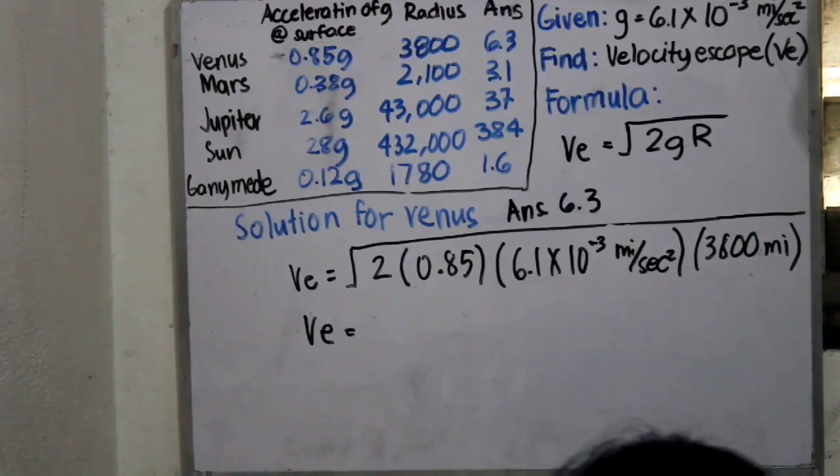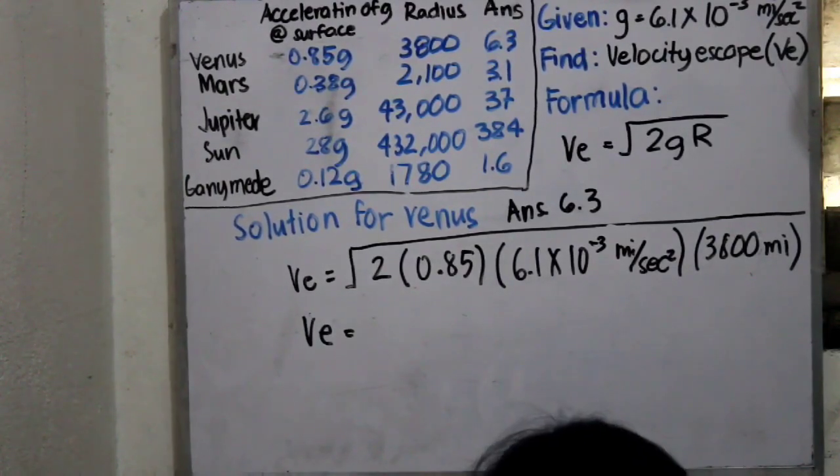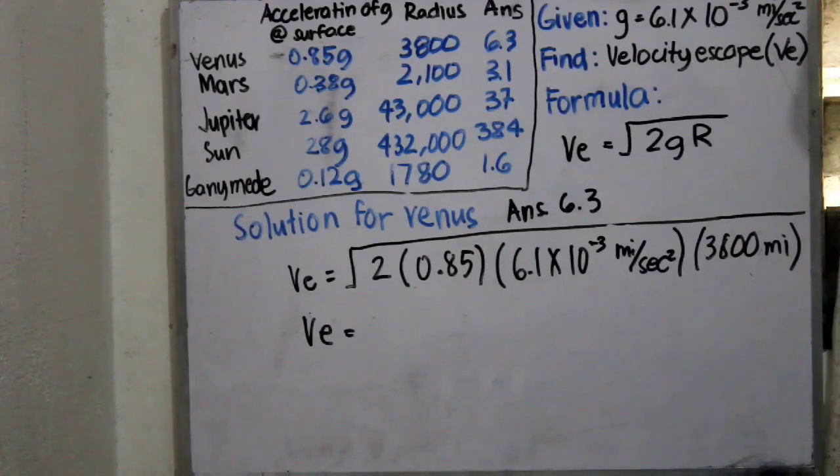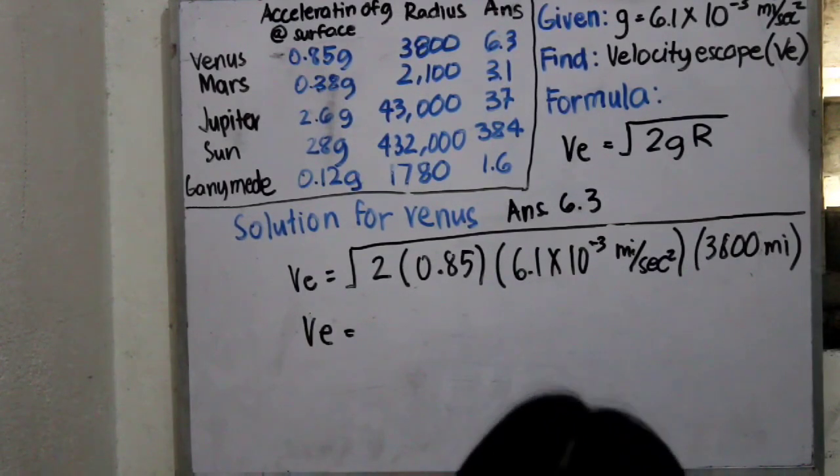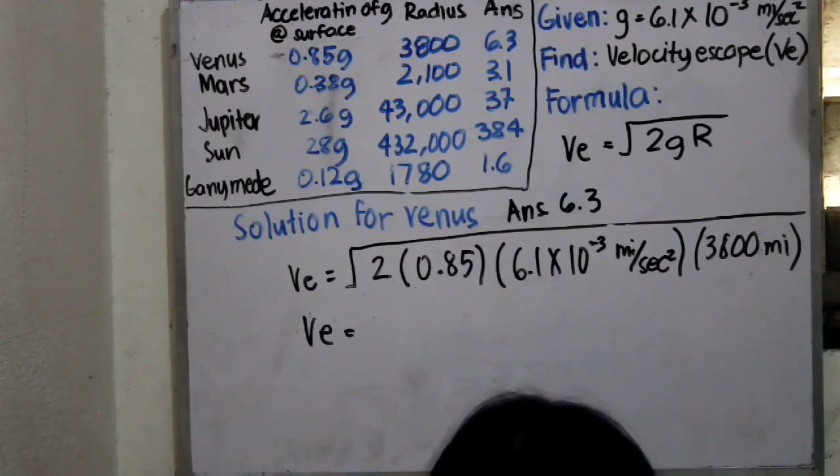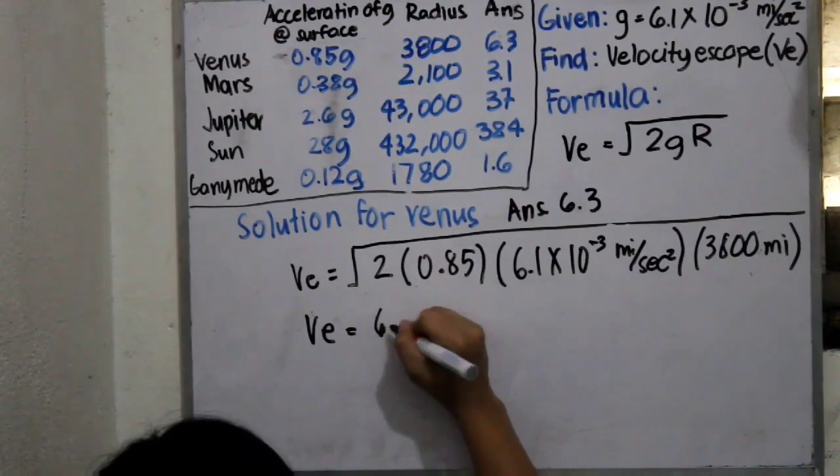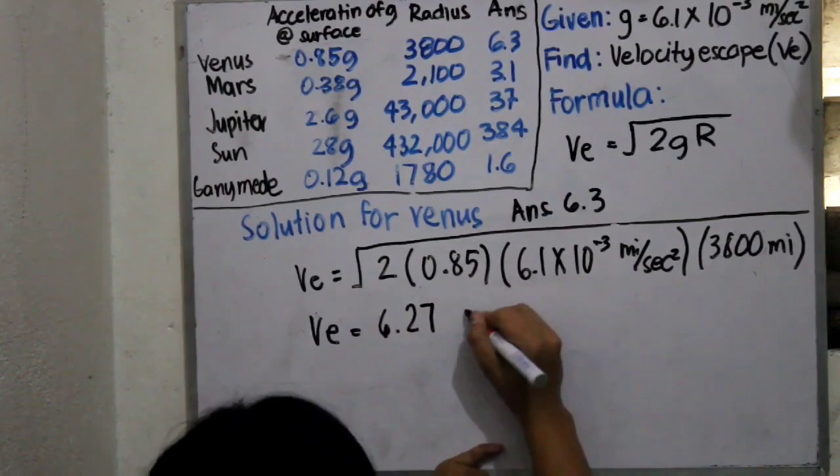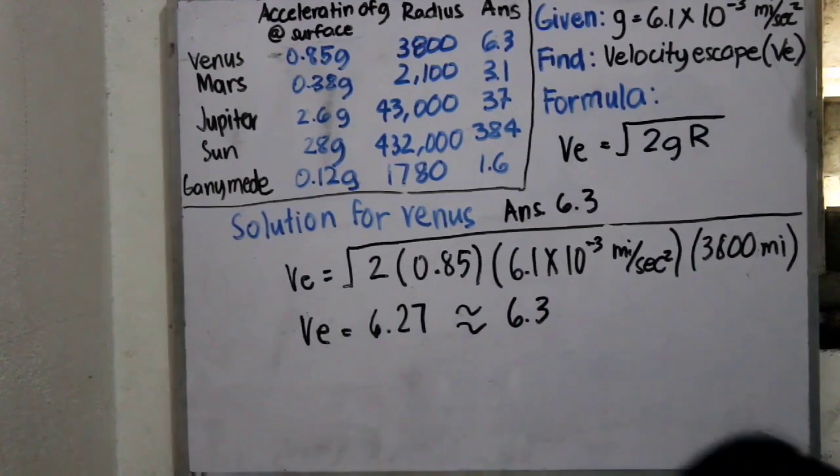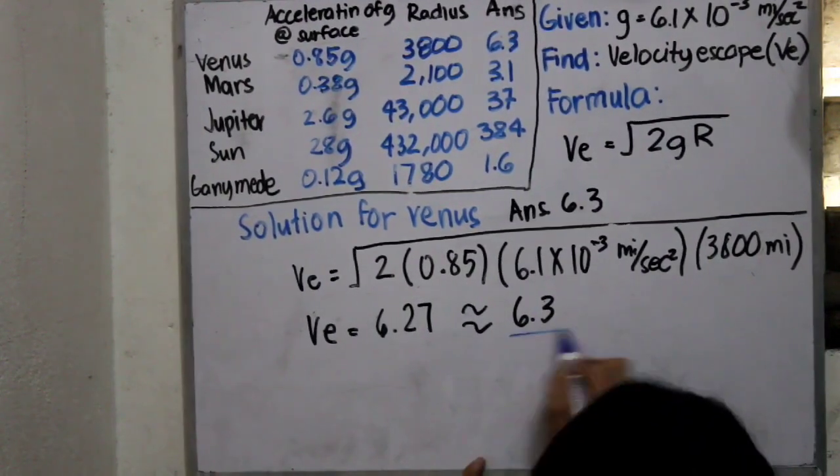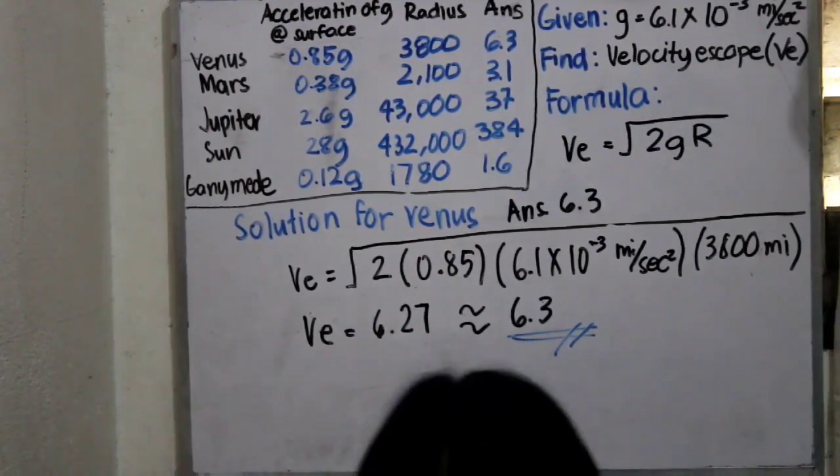We have to use our calculator to be able to compute for it for fast computation. I'm just going to explain why we arrive in miles per second because it's square root. Everything will be multiplied by 1 half, so 2 times 1 half will be 1. So, we will be left with miles per second. Meanwhile, while I'm computing, 6.27 is our computation. Since we are asked for two significant figures, my final answer would be 6.3 miles per second.